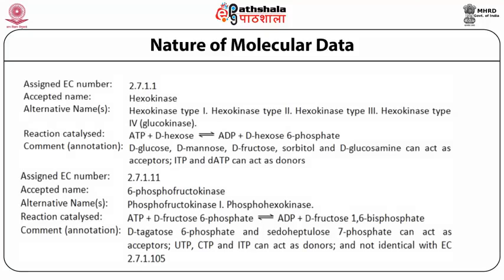Let us take a look at the nature of data for some enzymes involved in glycolysis. Enzyme 2.7.1.1 is hexokinase, which has alternative names such as hexokinase type 1, 2, 3, 4. Hexokinase 4 is glucokinase. This catalyzes the reaction between D-hexose and ATP to give ADP and D-hexose-6-phosphate. The annotation includes that it can have donors such as ITP and D-ATP, and acceptors such as D-glucose, D-mannose, D-fructose, sorbitol and D-glucosamine. I have already given the data about 6-phosphofructokinase, that is enzyme 2.7.1.11.